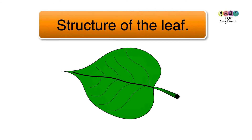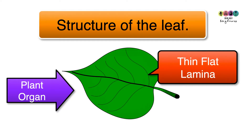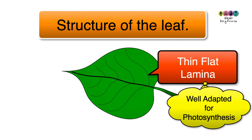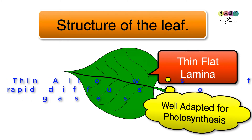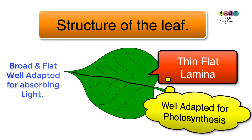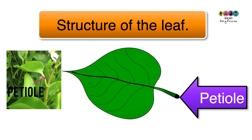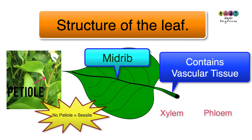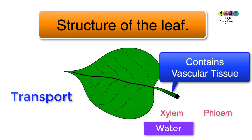Let's look at the structure of the leaf. The leaf is an organ of the plant — a thin, flat lamina. The fact that it's thin allows for the rapid diffusion of gases into and out of the leaf for photosynthesis. The fact that it's broad and flat means it's well adapted to absorbing sunlight to maximise photosynthesis. The leaf is usually attached to the stem by a stalk called the petiole, which contains important vascular tissue — xylem and phloem — for transporting water into the leaf and food made in the leaf down to other parts of the plant.